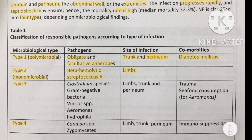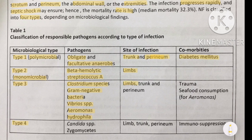Type 3 necrotizing fasciitis is caused by different organisms including Clostridium species, gram-negative bacteria such as Vibrio species, and Aeromonas hydrophila. The affected areas are the limbs, trunk, and perineum, and this type is especially associated with trauma or seafood consumption. Type 4 is caused by Candida species and Zygomycetes, affecting the limb, trunk, and perineum, and is seen in immunosuppressed patients.